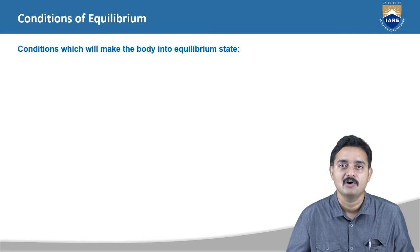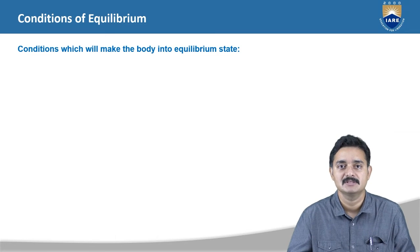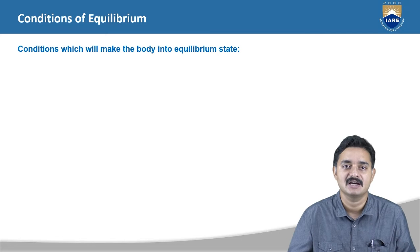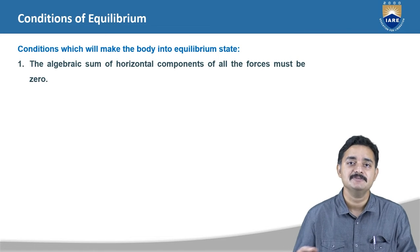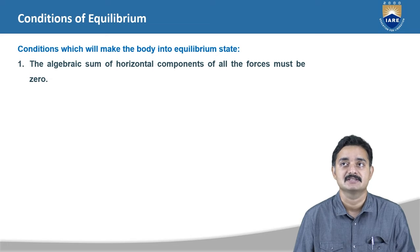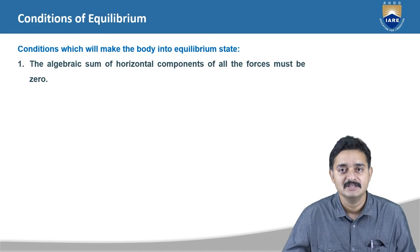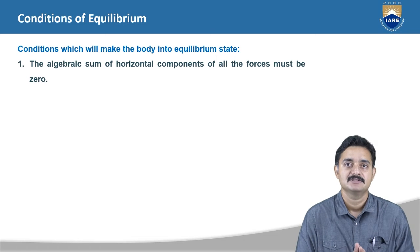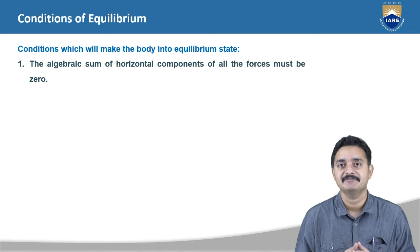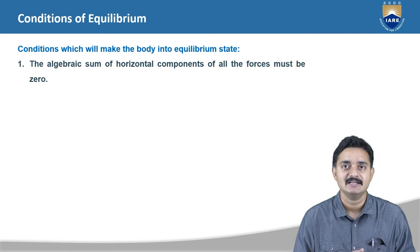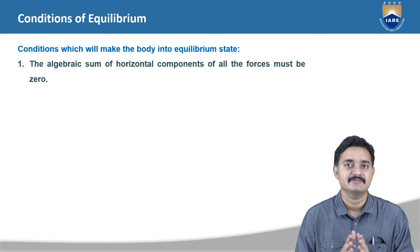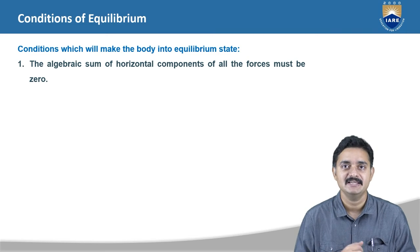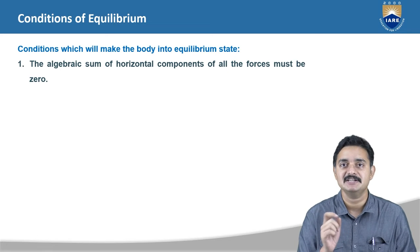For solving equilibrium system problems, we need three conditions. In the previous topics, we discussed how to identify the resultant for a system of forces by resolving the forces and then combining them to obtain the end resultant. But in the equilibrium case, the resultant is already zero.